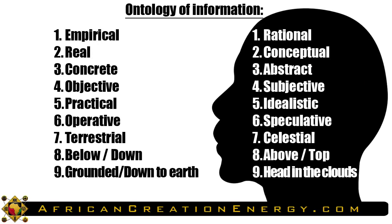Ontology is the study of existence, so when we speak of the ontology of information, we're talking about the state in which information exists. Information exists in one of two states: either empirical or rational. Synonyms for these two states are real versus conceptual, concrete versus abstract, objective versus subjective, practical versus idealistic, operative versus speculative, and symbolically: terrestrial versus celestial, or grounded and down to earth versus having your head in the clouds.